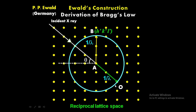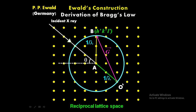If we connect these two reciprocal lattice points O and B by a vector pointing from O to B, this vector is nothing but the reciprocal lattice vector G — which is defined as the vector connecting two reciprocal lattice points.